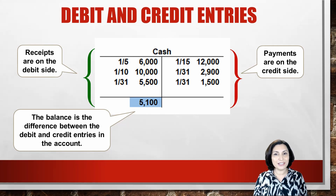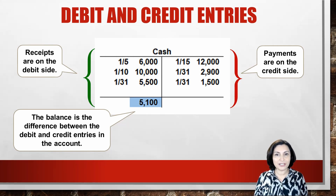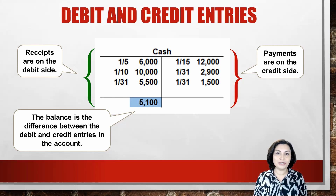If increases are placed on the left side of the account, all payments or decreases should be placed on the right or credit side of the account, according to the basic accounting rules for assets. The balance in any account is the difference between total debits and credits.